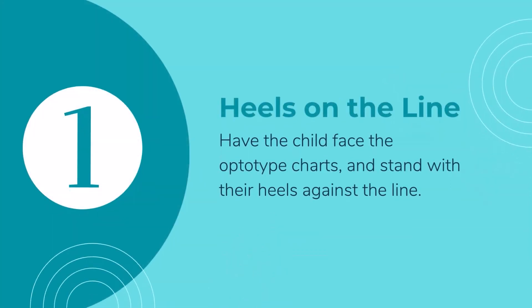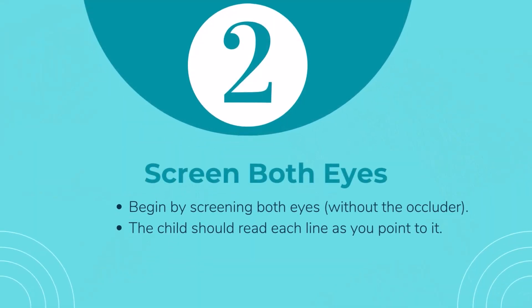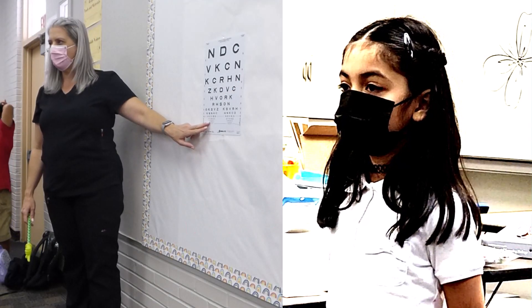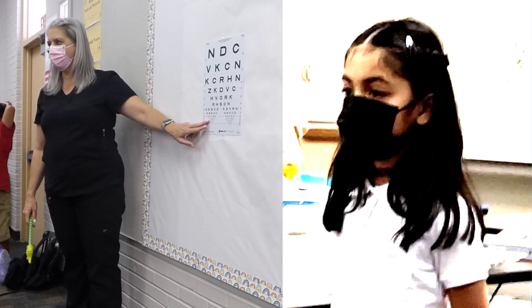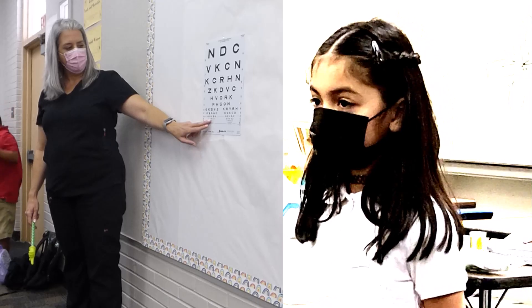First, have the child place their heels on the line with their feet in front of the line. Second, screen both eyes with no occluder. In addition to providing a measurement of the child's vision as a whole, this gives the child a low-stakes opportunity to acclimate to using the chart. It also allows the screener to make any necessary adjustments, such as switching to a LEA chart.